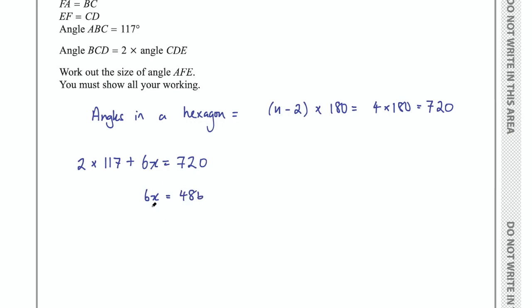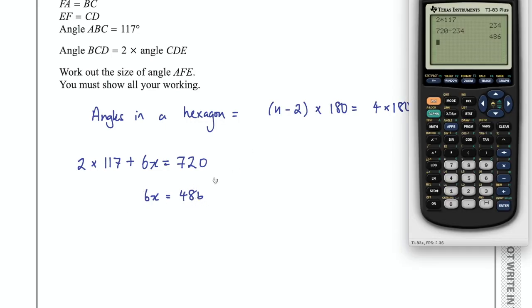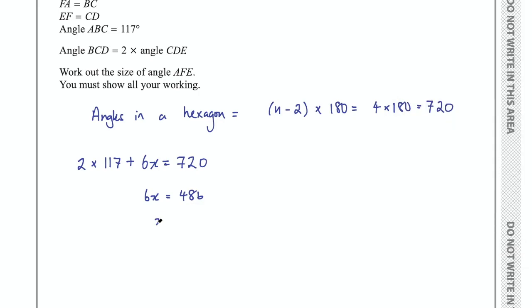And then how do we solve for x here? We need to get rid of this 6, which is multiplied by x. We do the opposite to get rid of that multiplication—we divide by 6 on the right-hand side. So 486 divided by 6 is going to give us our value for x. So x here is going to equal 81.